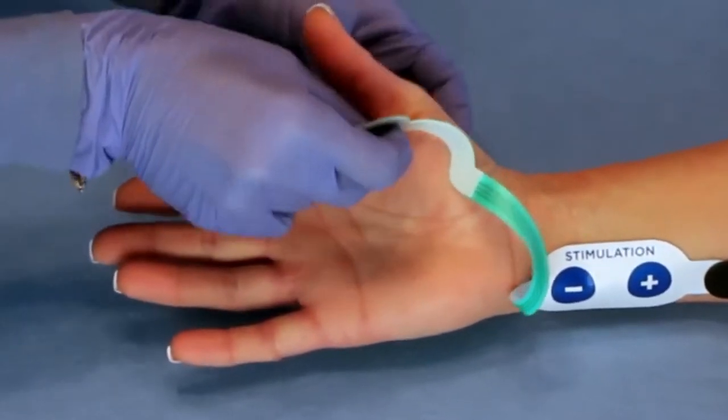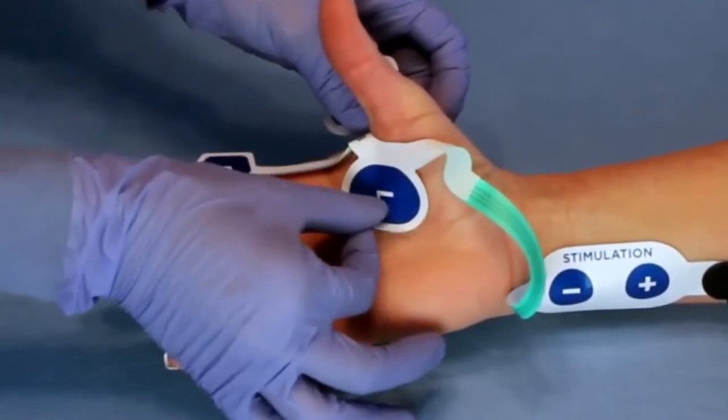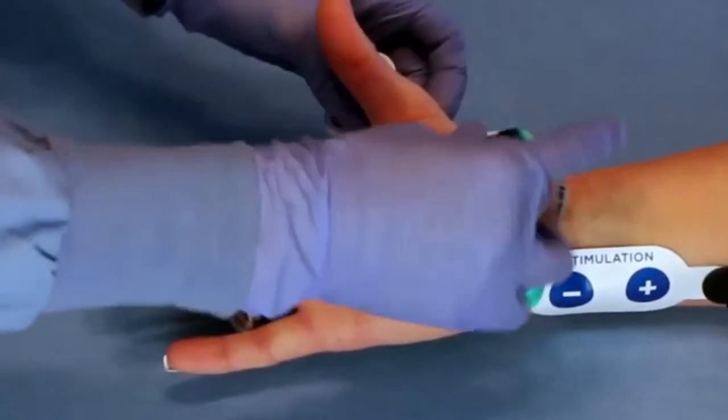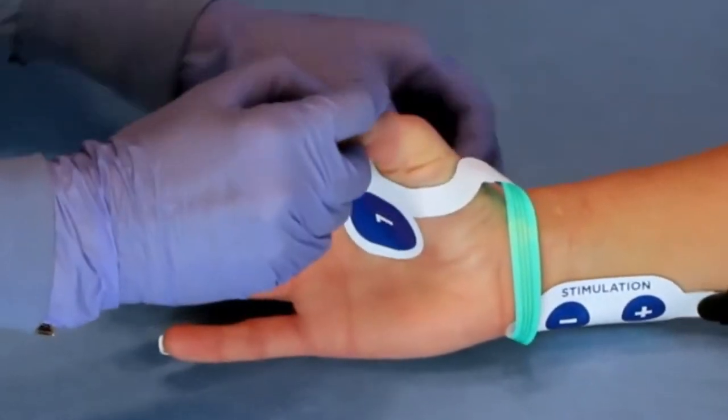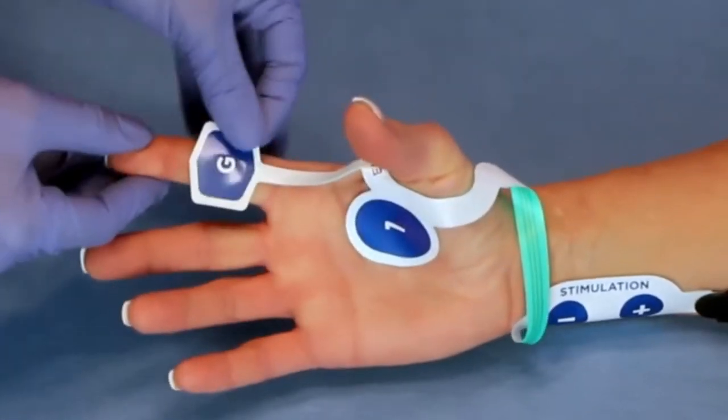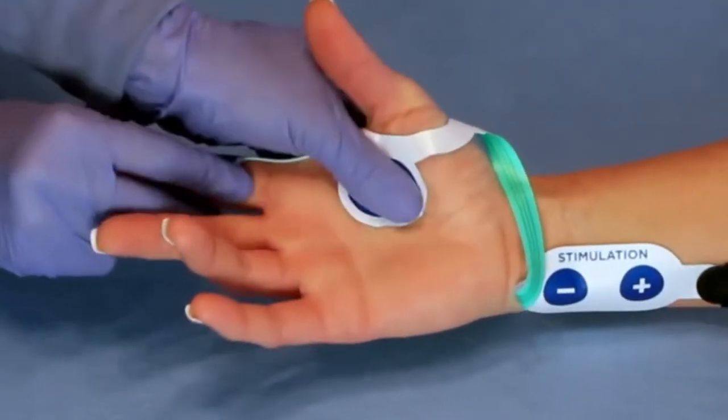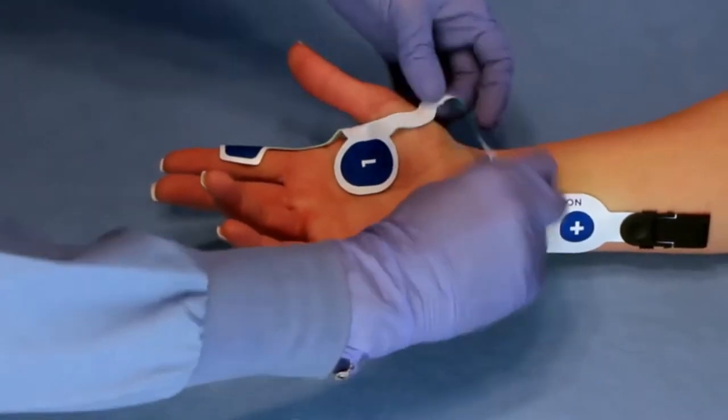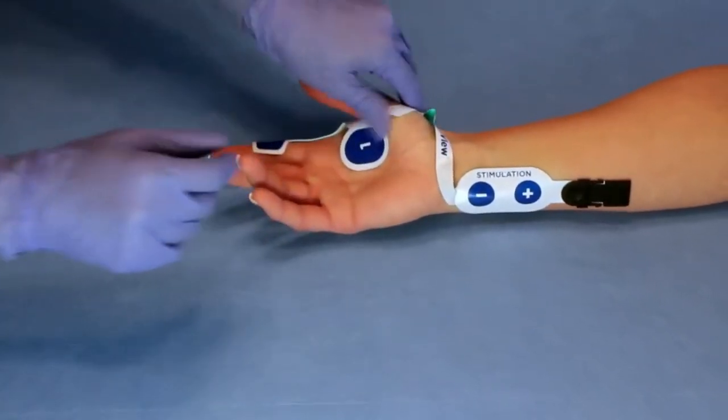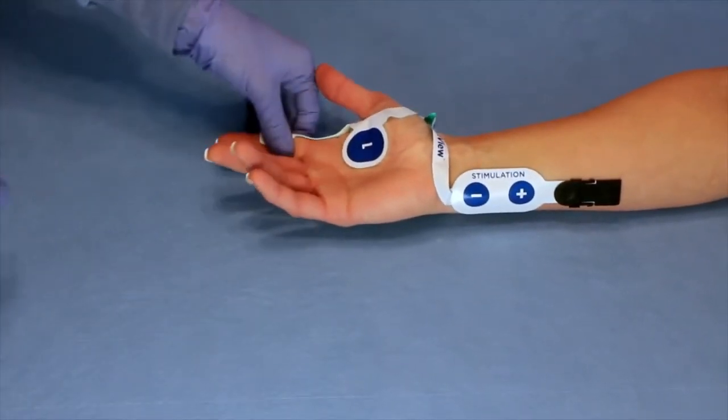Wrap the J-shaped cutout around the patient's thumb and press electrodes 1 and 2 over the adductor pollicis and first dorsal interosseous muscles and place the ground electrode on the index finger. Press down firmly on all electrodes to ensure adhesion.